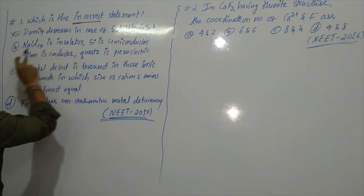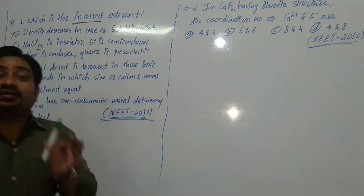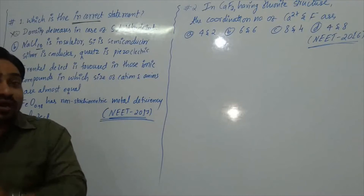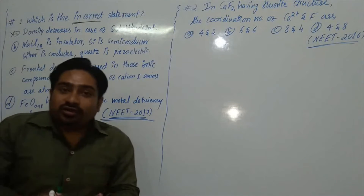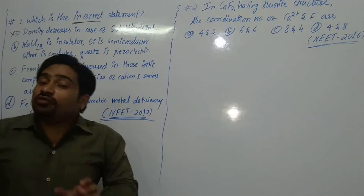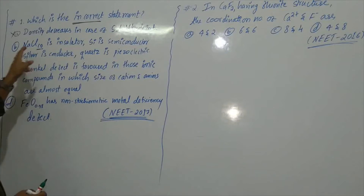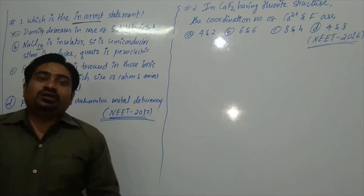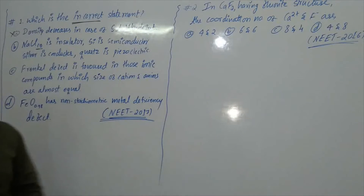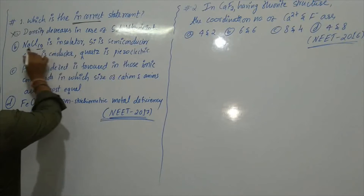Next: NaCl is an insulator in solid state. Ionic solids are insulators because in ionic solids the ions are not free to move. When dissolved in water or aqueous solution, the ions are free to move and can conduct electric current. So in solid state, ionic substances are insulators — this is also a correct statement.